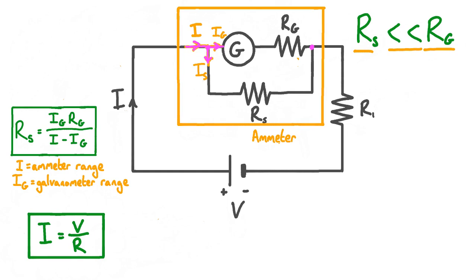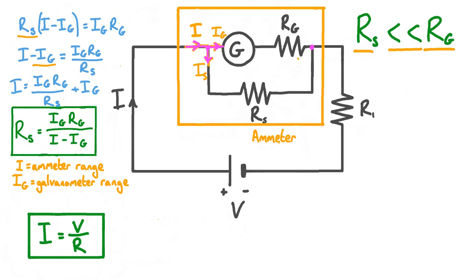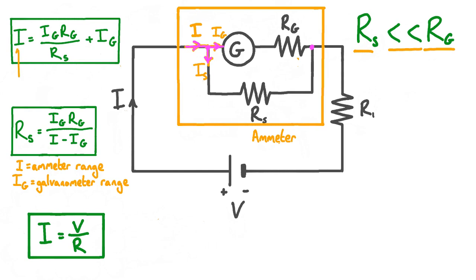The equation tells us the shunt resistance we need to use in order to measure a current I, given a galvanometer with a maximum deflection current of Ig and a resistance of Rg. We can also rearrange this equation to give us a formula for the maximum range of an ammeter. Making I the subject: multiply both sides by the denominator on the right-hand side, then divide both sides by Rs, and finally add Ig to both sides, giving us I equals Ig times Rg over Rs, plus Ig. This formula tells us the range of our ammeter I, in terms of Ig, Rg, and Rs.